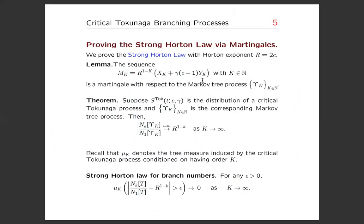If we make this quantity M_k = R^(-k)(X_k + γ(c-1)Y_k) with R equal to 2c, which will later turn out to be our Horton exponent, then we'll observe that M_k will be a martingale with respect to the Markov tree process ε_k.